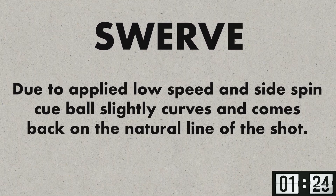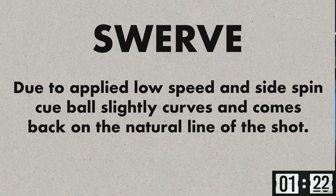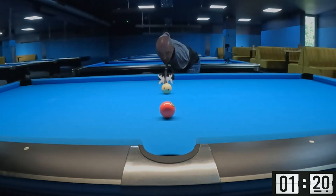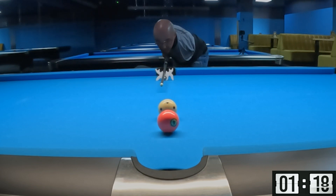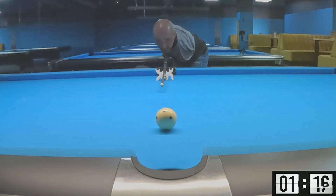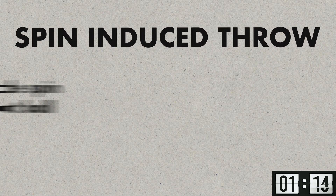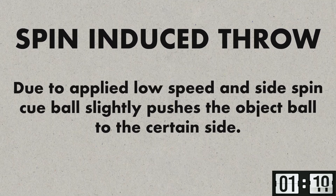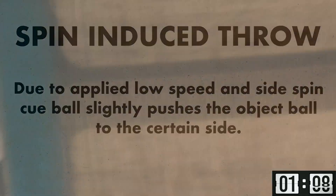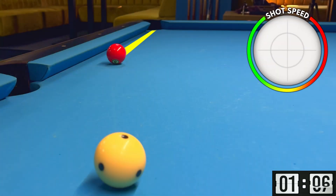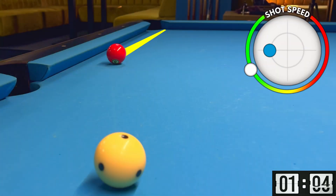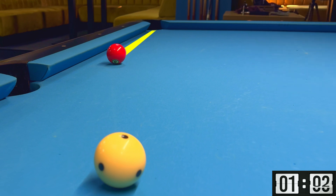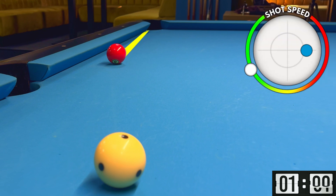The first factor means that the cue ball, due to applied sidespin, deviates from its natural line and then curves and comes back on the natural line of the shot. But the second factor means that due to applied sidespin, the cue ball pushes the object ball to a certain side. If we apply left spin, then the cue ball pushes the object ball to the right, and if we apply right spin, then it pushes the object ball to the left.